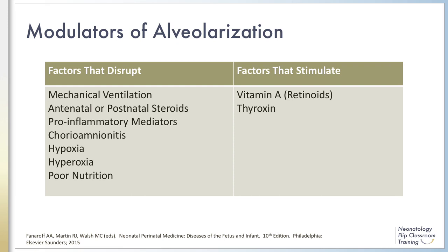Exposure to infections, such as chorioamnionitis and overexpression of pro-inflammatory mediators, have also been shown in animal models to interfere with alveolar and microvascular development. Other factors that disrupt alveolarization include poor nutrition, hypoxia, and hyperoxia.